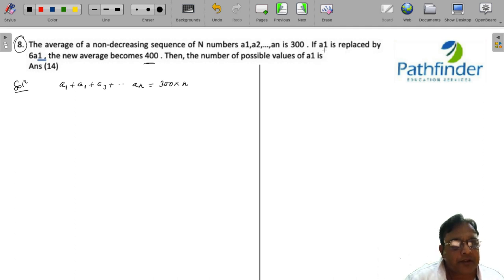Another information given is if a1, the first number, is replaced by 6 times a1. Let us call this equation 1. So you have 6 times a1 plus a2 plus a3 and so on till an as 400 times n, because the new average becomes 400.